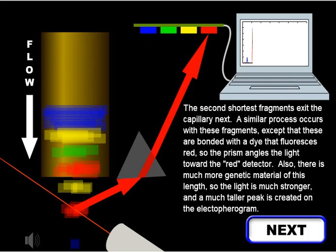The second shortest fragments exit the capillary next. A similar process occurs with these fragments, except that these are bonded with a dye that fluoresces red, so the prism angles the light toward the red detector. Also, there is much more genetic material of this length, so the light is much stronger, and a much taller peak is created on the electropherogram.